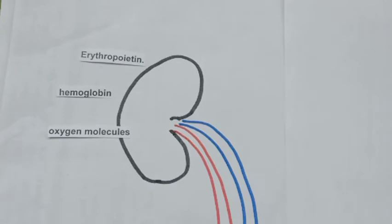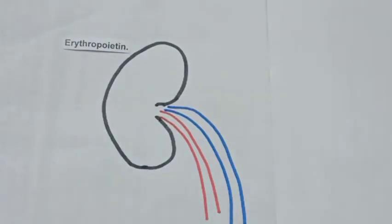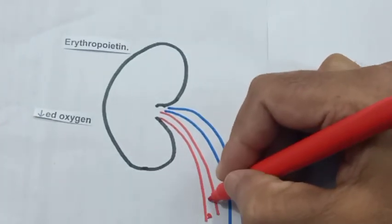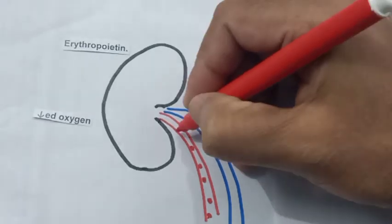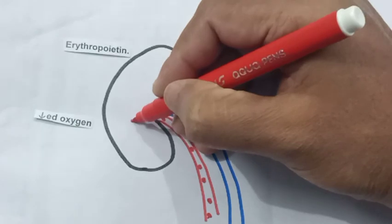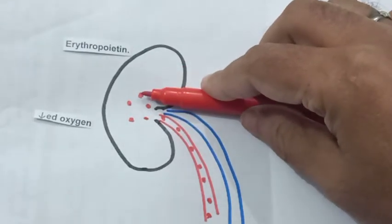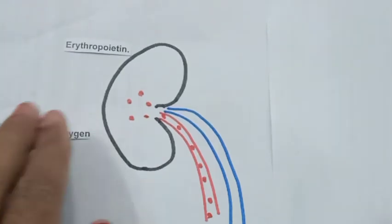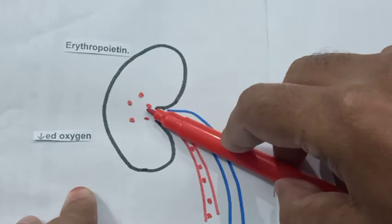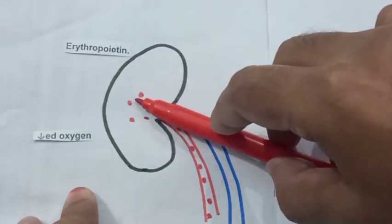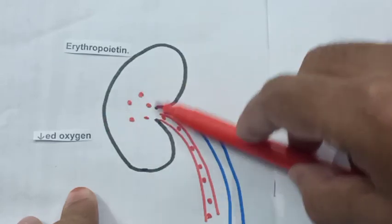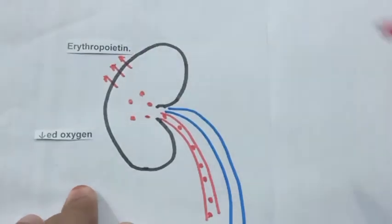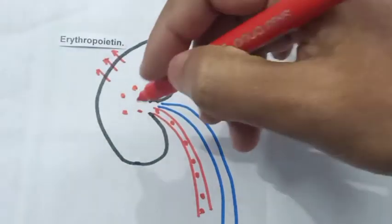When not enough oxygen molecules reach the kidney, the kidney detects that and produces more erythropoietin. So, less oxygen molecules inside the kidney triggers the kidney to produce more erythropoietin, leading to the secretion of erythropoietin.